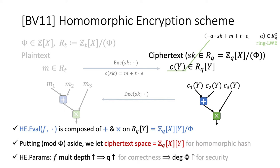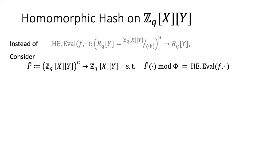Now let me introduce our homomorphic hash on the ciphertext space Z_q[x,y]. We can simply consider the function f-hat on this space Z_q[x,y], where f-hat is composed of addition and multiplication on this space. Then, what can be a homomorphic hash on this space?